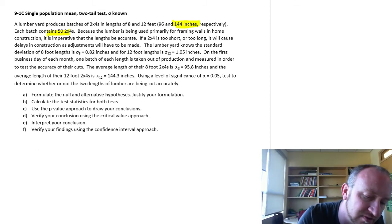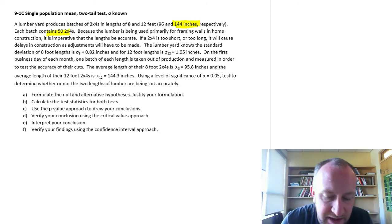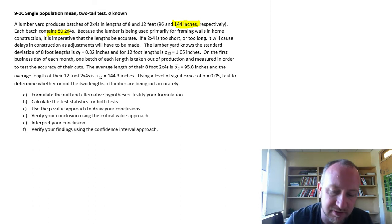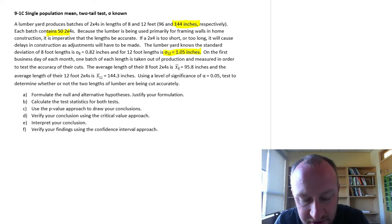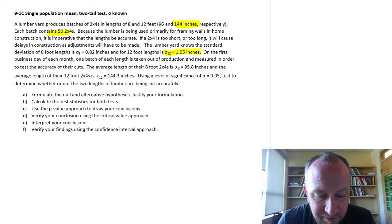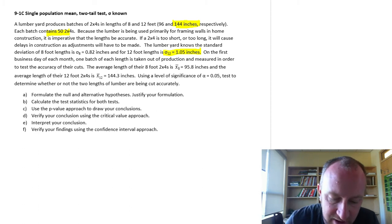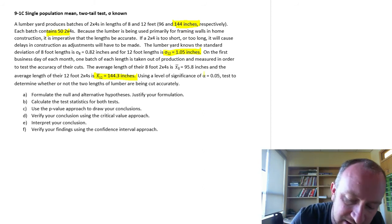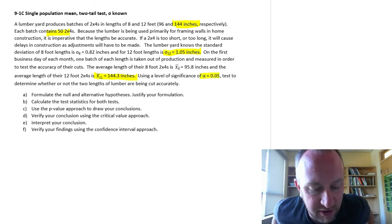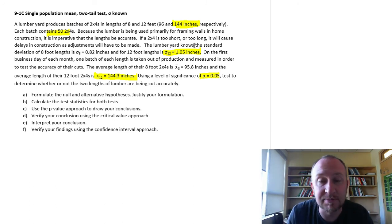Each batch contains 50 2x4s and we want it to be cut very accurately. We don't want the 2x4 to be too short or too long. The lumber yard knows the standard deviation for the 12 foot lengths is 1.05 inches. On the first day of the month we take a batch of the lumber to measure it to test for the accuracy. For the 12 foot length we found was 144.3 inches. Using a level of significance 0.05, test to determine whether or not the lumber is being cut accurately.